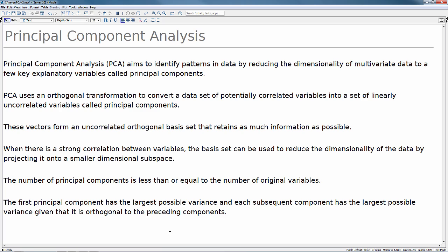PCA uses an orthogonal transformation to convert a dataset of potentially correlated variables into a set of linearly uncorrelated variables called principal components. These vectors form an uncorrelated orthogonal basis set that retain as much information as possible.